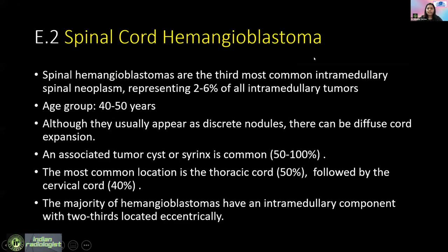Spinal hemangioblastomas are the third most common intramedullary spinal neoplasm, representing 2 to 6 percent of all intramedullary tumors. They should be considered as a differential in patients aged 40 to 50 years. You mostly see discrete nodules; sometimes there will be a syrinx or cyst associated with them. The most common location is the thoracic cord.